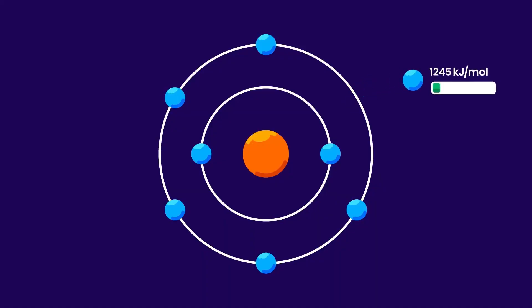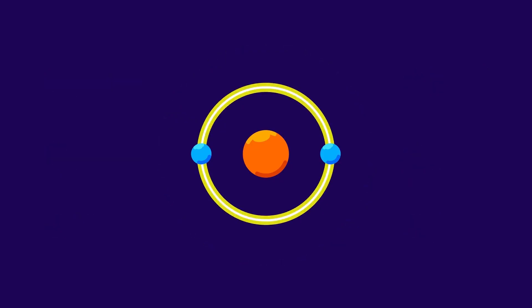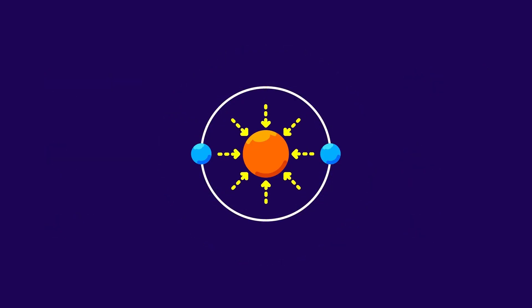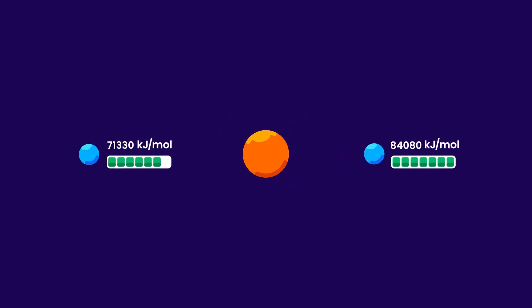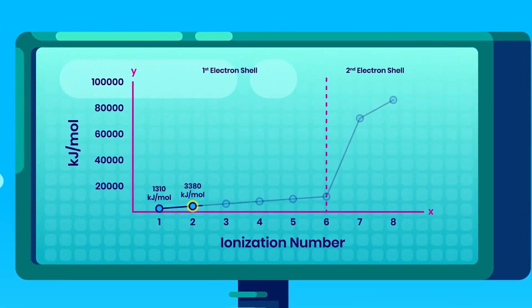The first ionization energy represents the energy needed to eliminate the first electron from an atom, and the second one refers to the energy required for the second electron removal, and so on. The successive ionization energy increases because, with each electron removal, the atom becomes smaller. This leads to a stronger attraction from the positively charged nucleus, demanding more energy to remove the subsequent electron. This means the first ionization energy is lower than the second, and the second is lower than the third, and so forth.